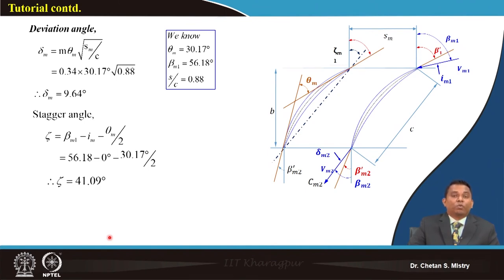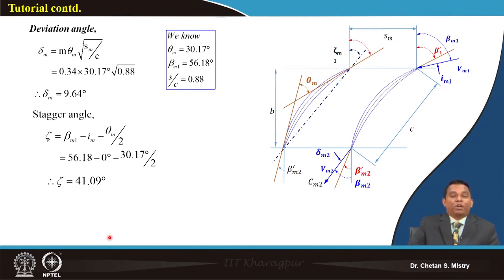The mean line calculation follows a similar procedure to what is discussed in textbooks. For a more systematic and precise design, more spanwise stations are needed — this gives better control over the blade performance as expected.